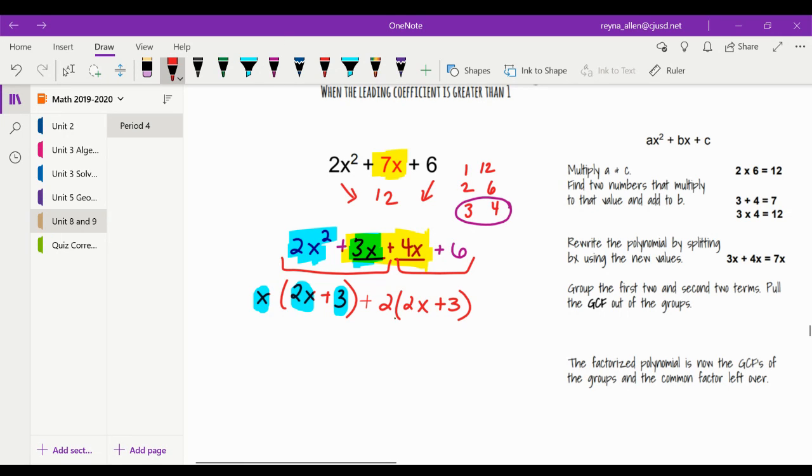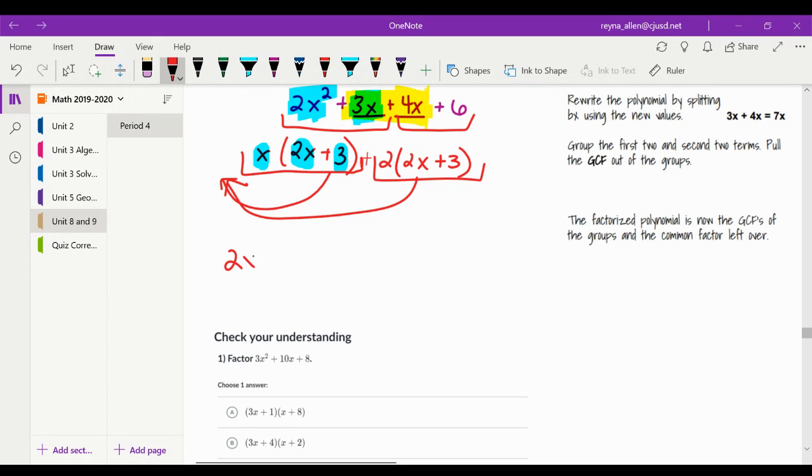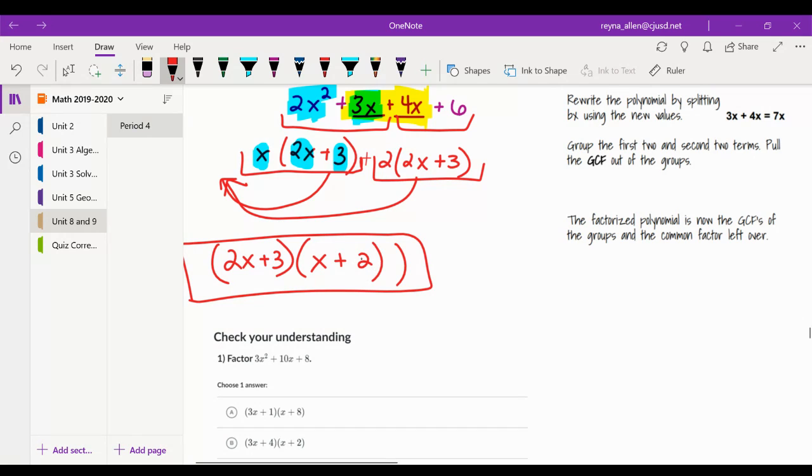So the last step is now doing that again. We say what does this term have in common with this term? Well, they each have a 2x plus 3. So we're going to factor that out. So it's like a big factor. So we get 2x plus 3 on the outside. And then your next factor is what you're left with. So on my left, I'm left with an x. On my right, I'm left with a positive 2. So now it is fully factored. Let's try another one.